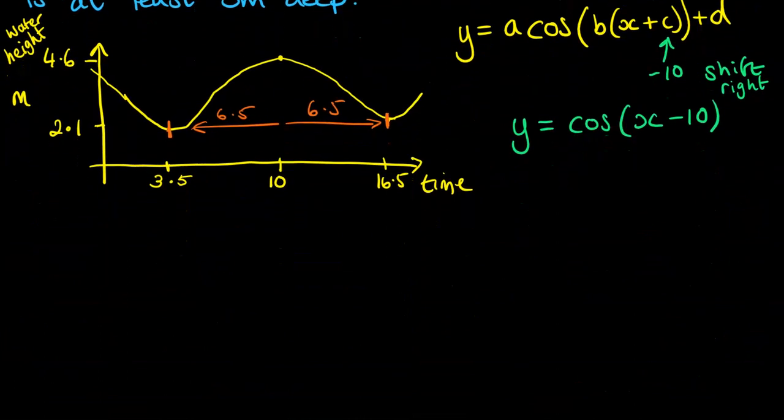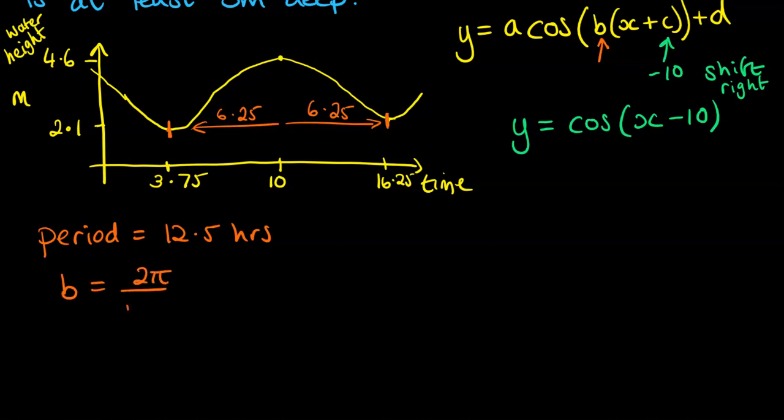So it's actually this bit here, that's not 6.5, it's 6.25, so I'm just going to fix that up, and that makes this 3.75. And these change like so. All right, so we've got 6.25 either way, so one period will be equal to 12.5 hours. This helps us to work out the b part of our equation, so b will be 2π divided by 12.5.